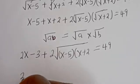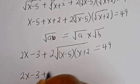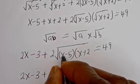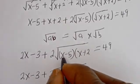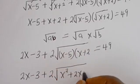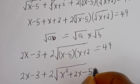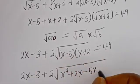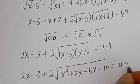Now we expand the product inside the radical: s times s is s squared, s times 2 is plus 2s, minus 5 times s is minus 5s, and minus 5 times 2 is minus 10. So we have 2s minus 3 plus 2 times square root of s squared plus 2s minus 5s minus 10, is equal to 49.